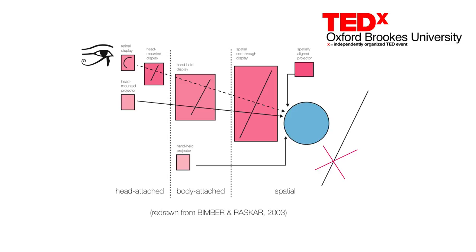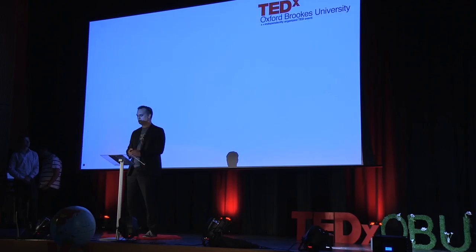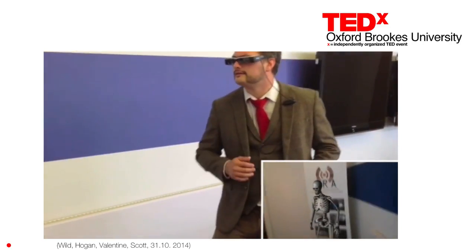There are many different gateway devices available for augmented reality: retinal displays, head-mounted displays, handheld devices — some of you may have already played Pokemon Go on a mobile phone — spatial see-through displays, projection-based displays, and many different types. Head-mounted displays, also known as smart glasses, make possible an example like this.